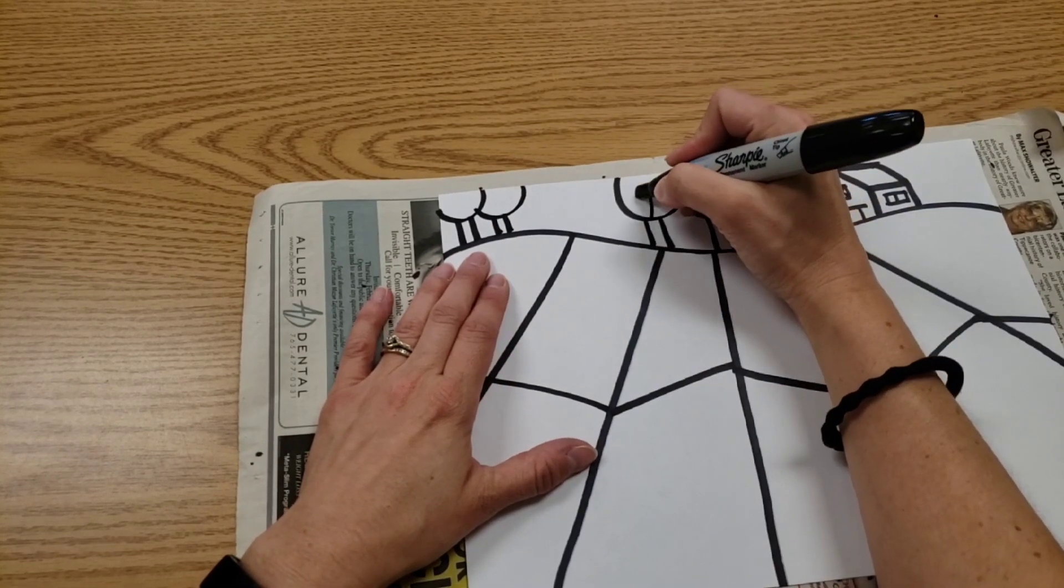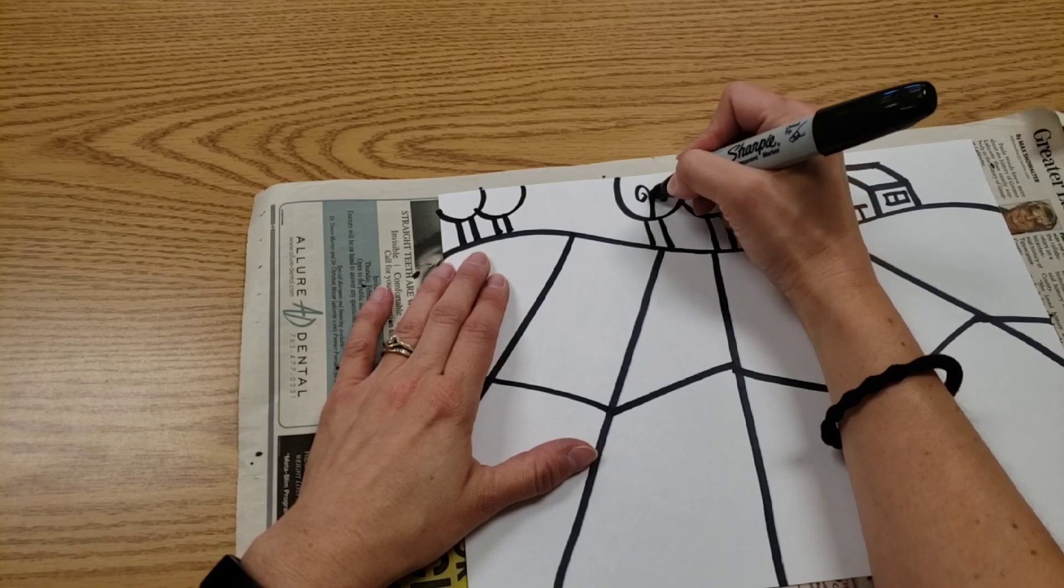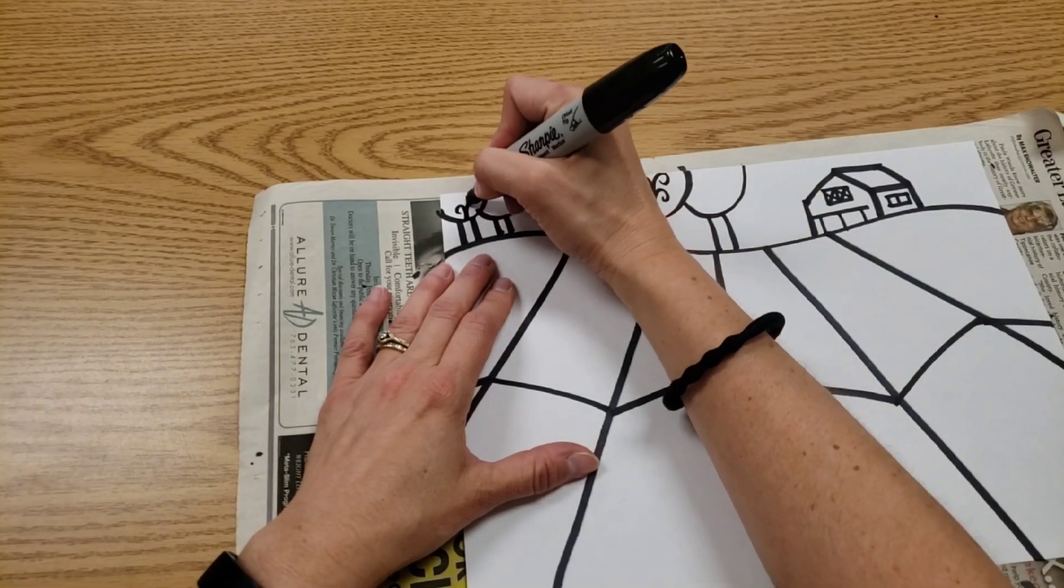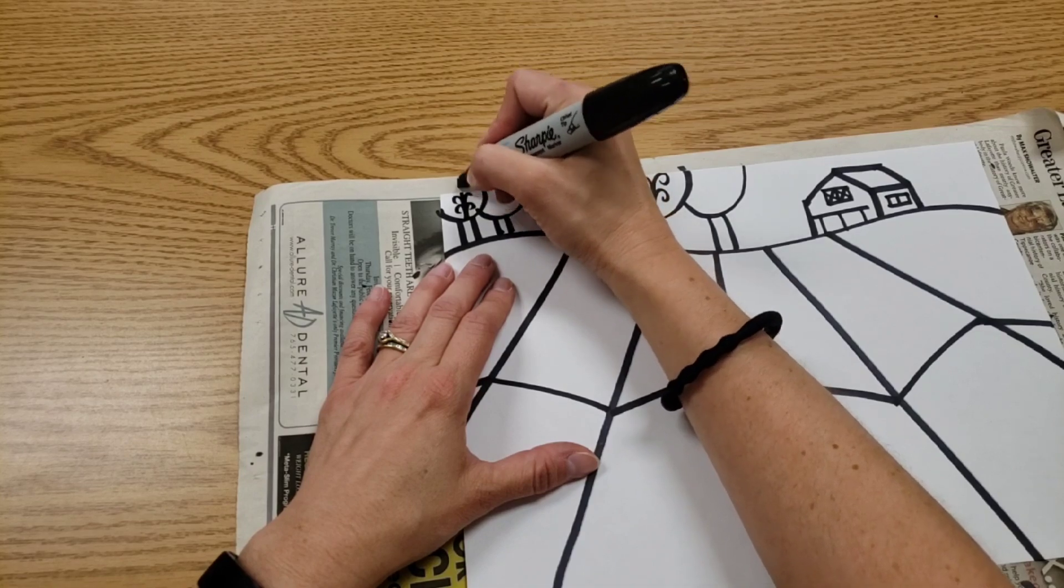And sometimes she would add little curly cues inside the tree for detail. You don't have to do that to all of them. Just pick a few.